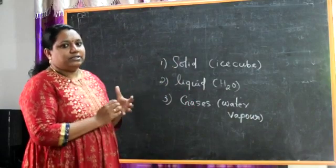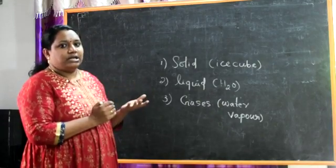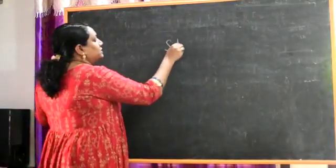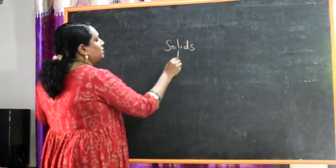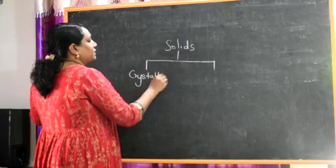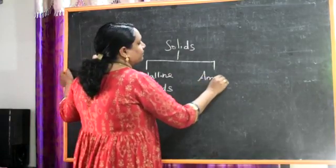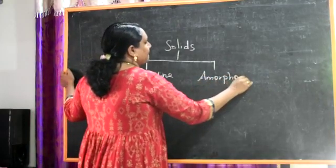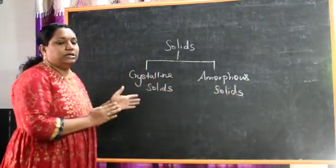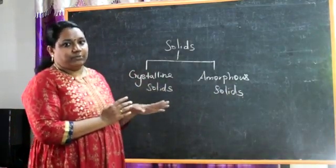Solid state is classified based on the structure of the molecules. Solids are of two basic categories: the first one is crystalline solids, and the second one is amorphous solids. This is solid state chemistry — we will see the first portion, which is the difference between crystalline solids and amorphous solids.